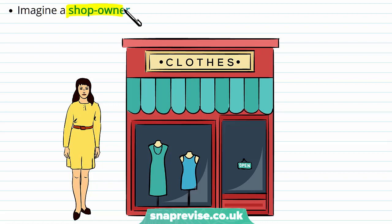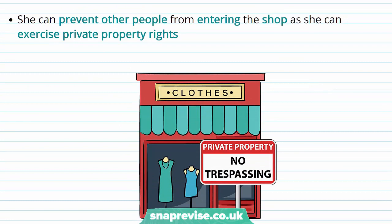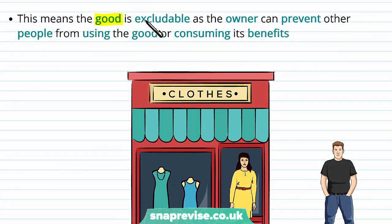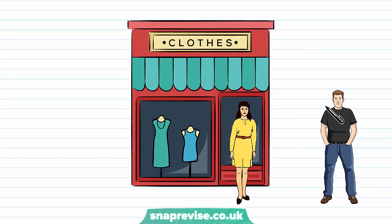Let's imagine a shop owner who has clothes in a shop — all of those clothes will be described as private goods owned by the shop owner. As the shop owner owns the shop, she can prevent other people from entering as she can exercise private property rights. A property right is what the government has given to people, which allows them to decide what happens with their property and it can't be taken away from them. This means that the good is excludable, as the owner can prevent other people from using the good or consuming its benefits. Suppose a shop owner saw some people coming into the shop — she can turn them away and not allow them access to the private goods, the clothes, as she is exercising her private property rights.